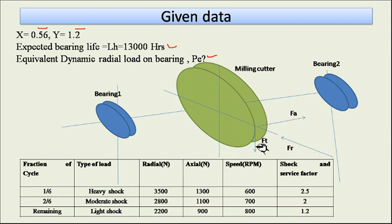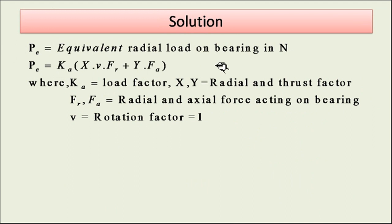This is the bearing supporting, suppose, this milling cutter. There will be forces acting in the tangential direction and axial direction - this is your radial force and axial force. Our aim is to find out for each fraction of cycle: Pe1, then Pe2, then Pe3, and then the combined Pe equivalent load.